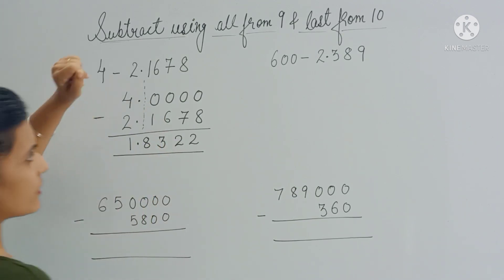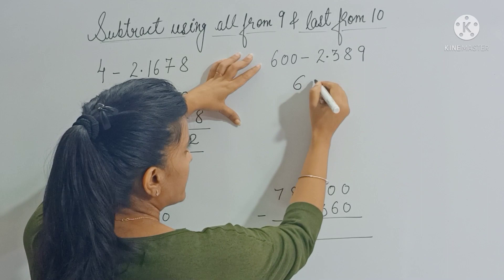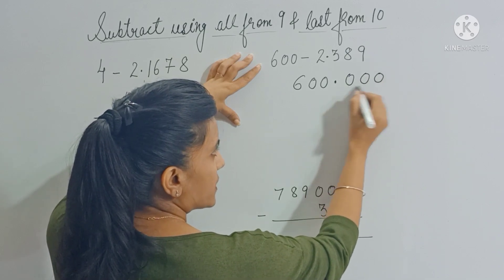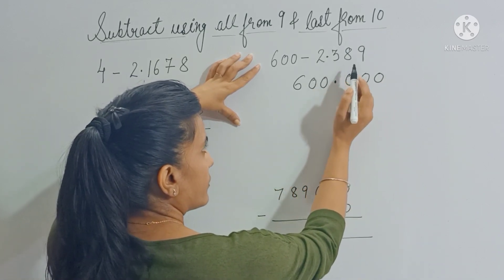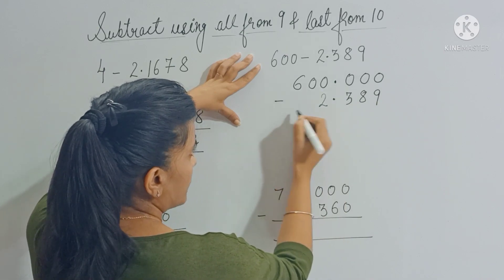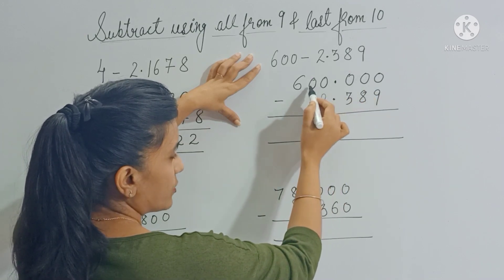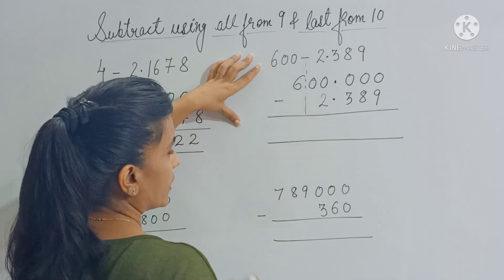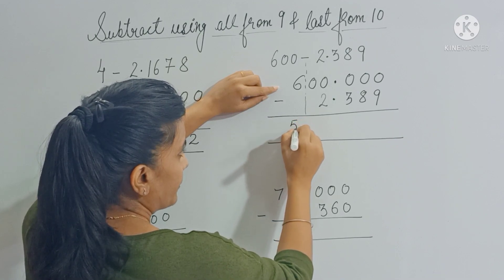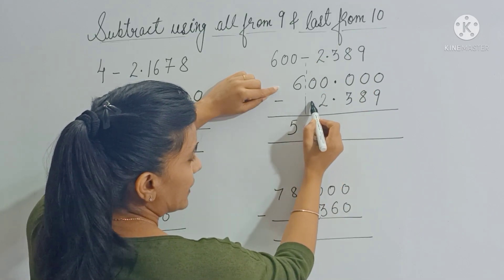Let's see one more problem: subtract 2.389 from 600. Write 600 as 600.000 — three zeros because there are 3 decimal digits. Write the other number below it aligned at the decimal. Now separate all the zeros — you have five zeros. On the left-hand side you have 6, so 6 minus 1 gives you 5. Apply 'all from 9, last from 10' on the right, but there's nothing above one position.